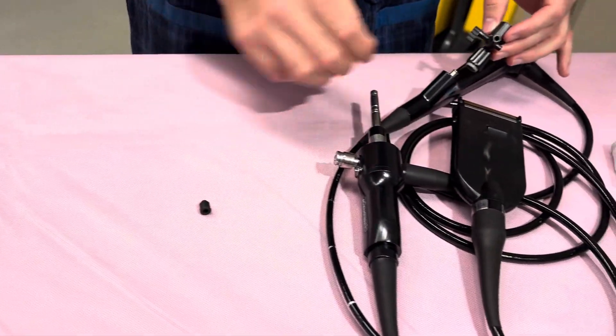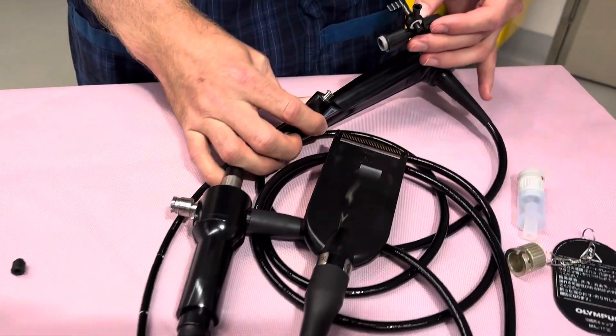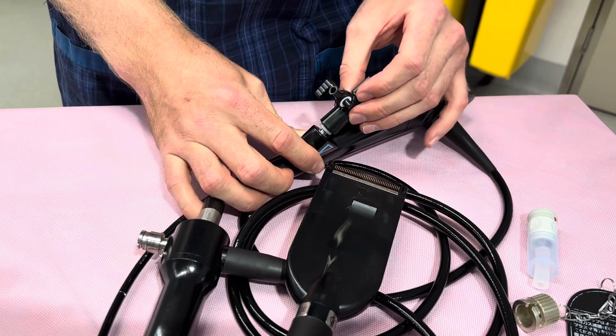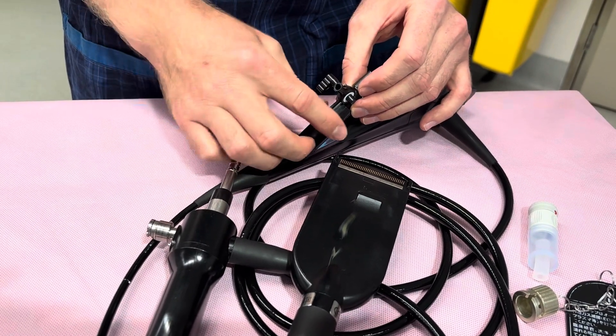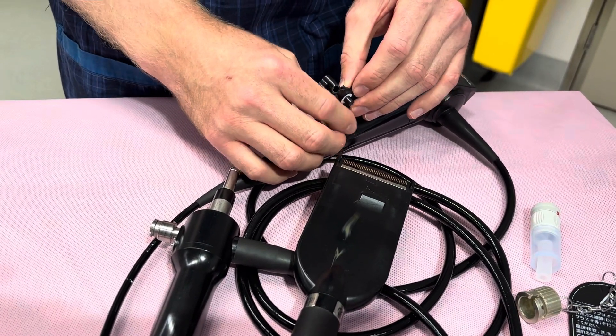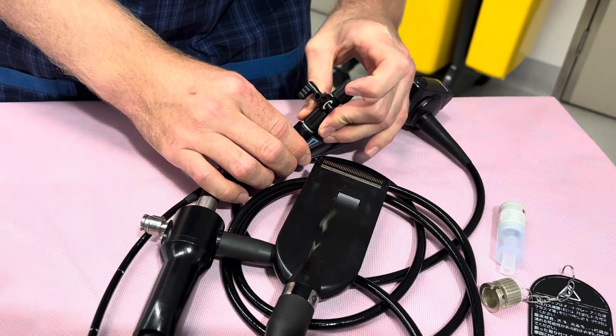Once you've done that, it sits over where you took the booster off, onto the silver, and just screws down. Make sure that is facing up because that's where your giving set will attach for the fluid. Screw it on like so.